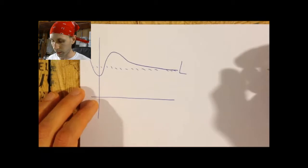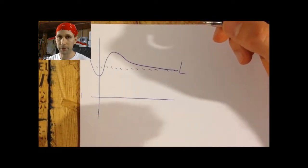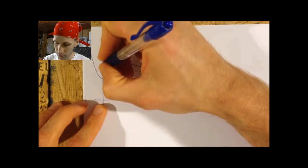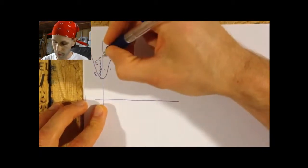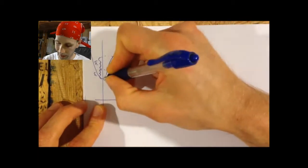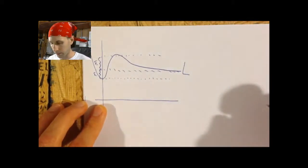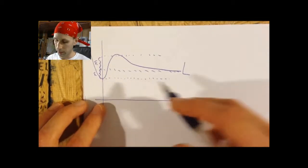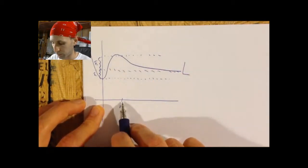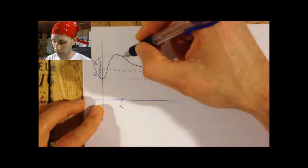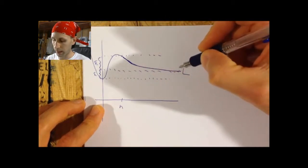What this means rigorously is that for any epsilon greater than zero — you can think of epsilon as a tolerance — no matter how small, there exists an x-value N such that whenever x is beyond N, the values of the function come within epsilon units of that number and never escape again.